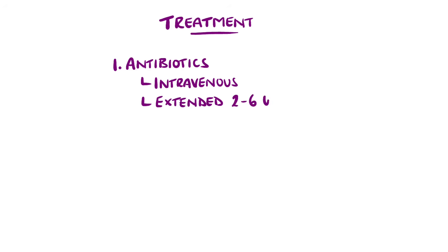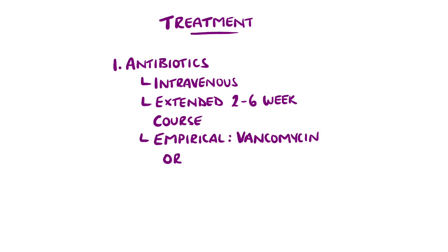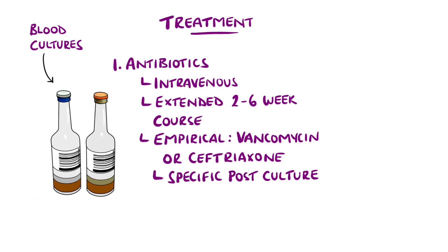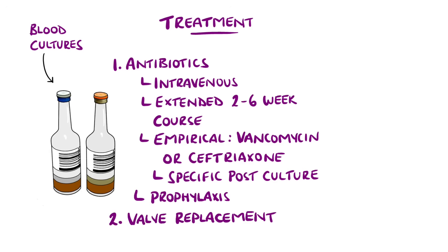The mainstay of treatment is intravenous antibiotics, usually an extended course of two to six weeks because the bacteria are protected and in a location that is not easy to reach. Agents like vancomycin and ceftriaxone are favored as empirical agents to be used after the initial blood cultures are taken. This is important as taking blood cultures after starting antibiotics can lead to negative cultures. Once cultures are grown, specific antibiotic sensitivities can be used for specific antibiotic therapy. Antibiotics may be given prophylactically when a predisposed patient is due to undergo certain procedures such as dental procedures, but the evidence behind this is not always definitive. Valve replacement may be needed in some cases such as significant regurgitation, hemodynamic compromise, or complications.